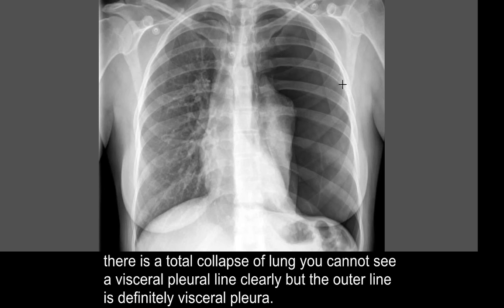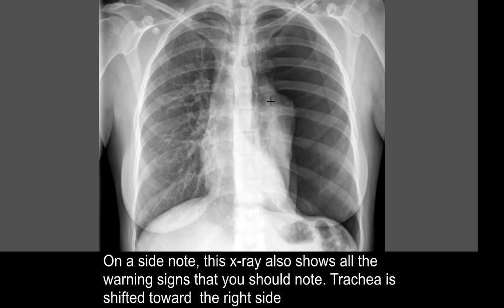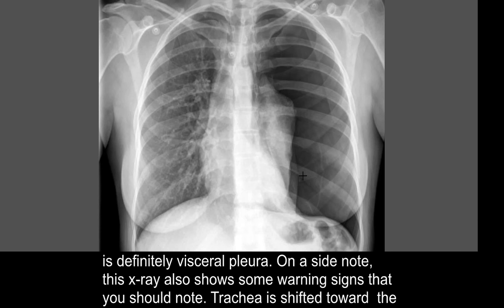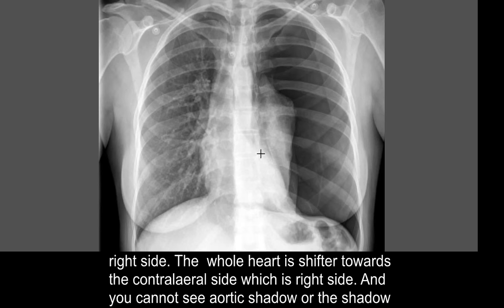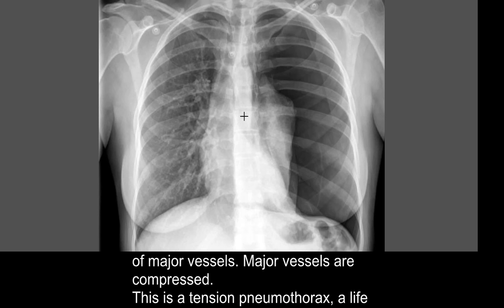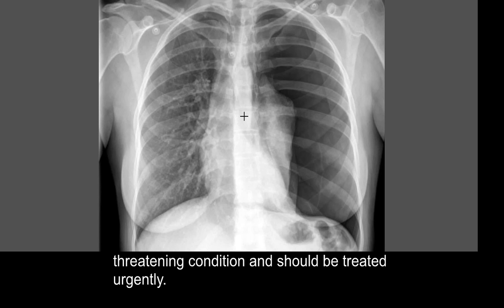Note that because there is total collapse of the lung, you cannot see the visceral pleural line clearly, but the outer line is definitely visceral pleura. This X-ray also shows some warning signs: the trachea is shifted towards the right side, the whole heart is shifted towards the contralateral right side, and we cannot see the aortic shadow or the shadows of the major vessels — they are compressed. This is a tension pneumothorax. It is a life-threatening condition and should be treated urgently.